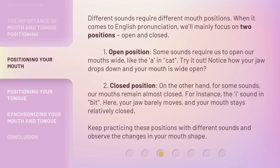Different sounds require different mouth positions. When it comes to English pronunciation, we'll mainly focus on two positions: open and closed. 1. Open Position: Some sounds require us to open our mouths wide, like the A in 'Cat.' Try it out — notice how your jaw drops down and your mouth is wide open? 2. Closed Position: On the other hand, for some sounds, our mouths remain almost closed. For instance, the I sound in 'bit.' Here, your jaw barely moves and your mouth stays relatively closed. Keep practicing these positions with different sounds and observe the changes in your mouth shape.